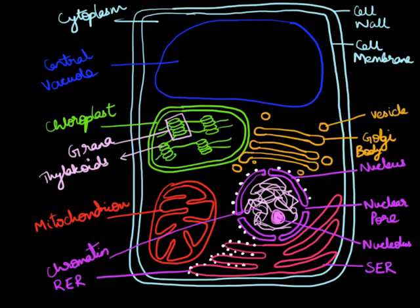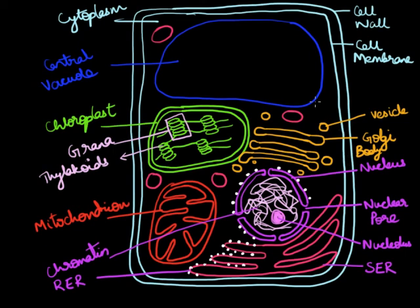Another membrane-bound organelle found in plant cells is called the peroxisome. It is just a vesicle that contains some enzymes. We randomly draw a few of these circles and label them as peroxisomes.